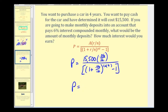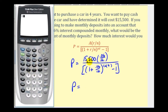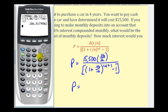Let's go ahead and evaluate this on our calculator. Our numerator is going to be 15,500 times 0.06 divided by 12. Divided by our denominator: one plus 0.06 divided by 12, raised to the power of 12 times four, which is 48, minus one, then close parenthesis for our denominator. So we'll have to save $286.52 per month if we want to pay cash for this car.